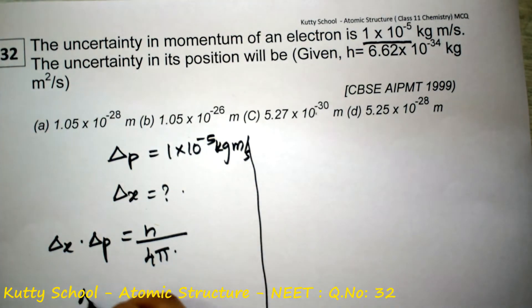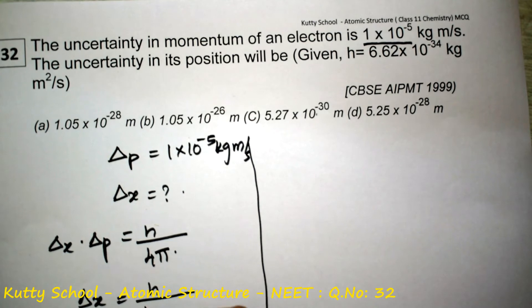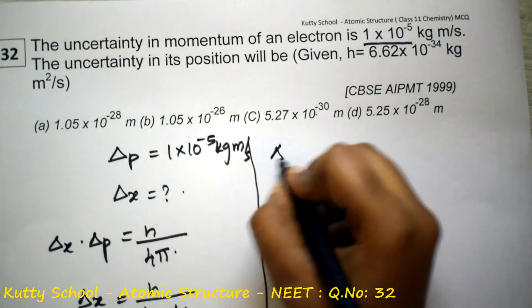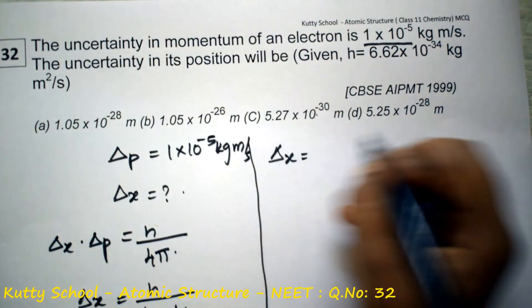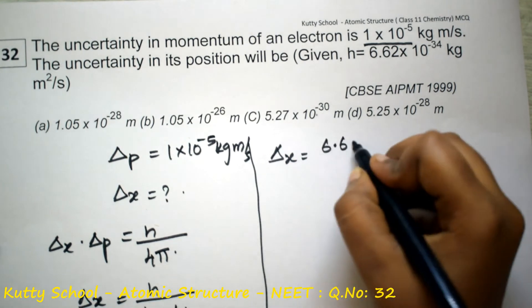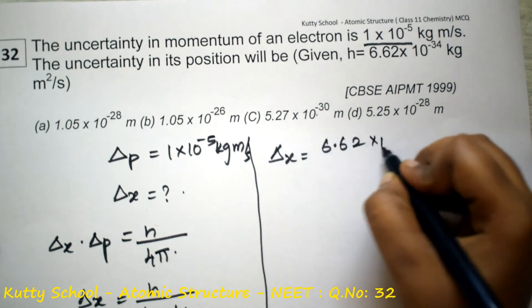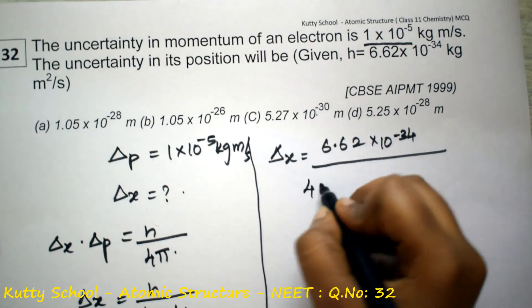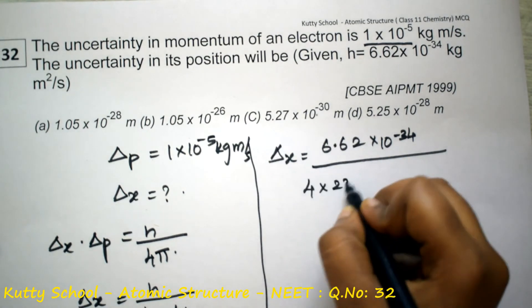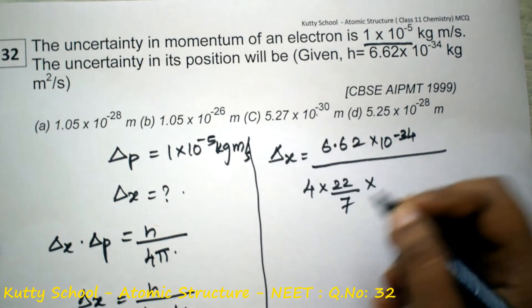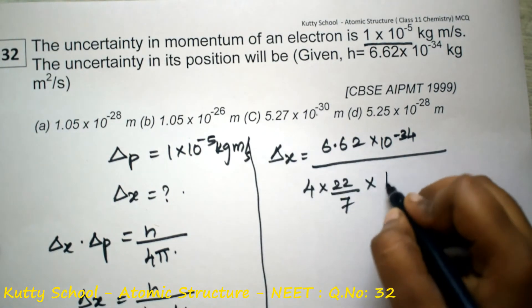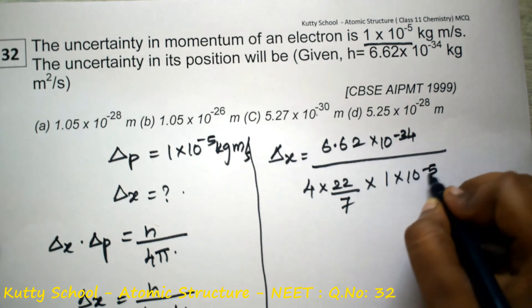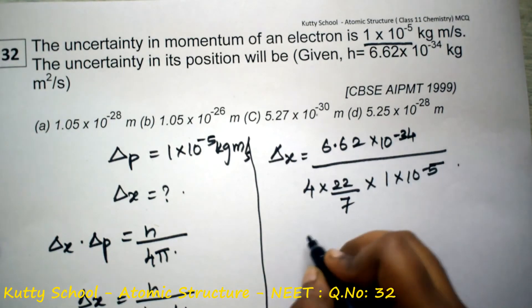Substituting: Δx = h / (4π · Δp). The value of h is 6.62 × 10⁻³⁴, divided by 4 × π (approximately 22/7), and Δp is equal to 1 × 10⁻⁵.